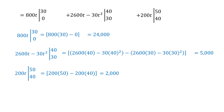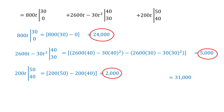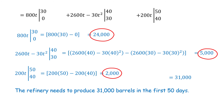For the first 30 days there are 24,000 barrels; for the next 10 days, 5,000 barrels; and the last 10 days (40 to 50), 2,000 barrels. Adding those together, the result is 31,000. The refinery produces 31,000 barrels in the first 50 days.